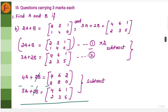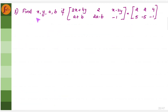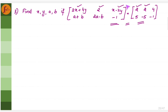There are similar problems where we have to find A and B; in a similar approach we can solve them. Now let us take a problem where we have to find x, y, a, b if this particular matrix equals another matrix. Since both matrices are equal, each corresponding element should be equal.